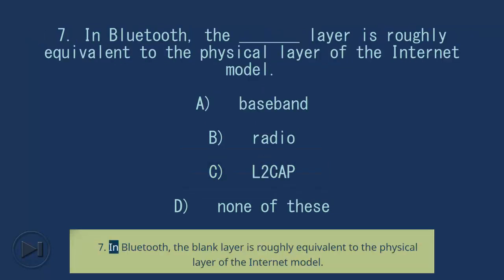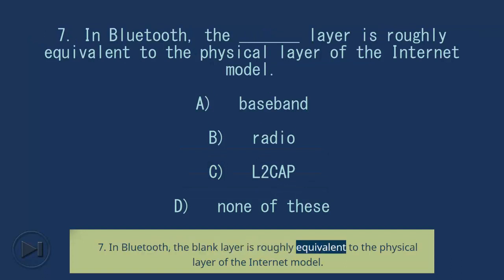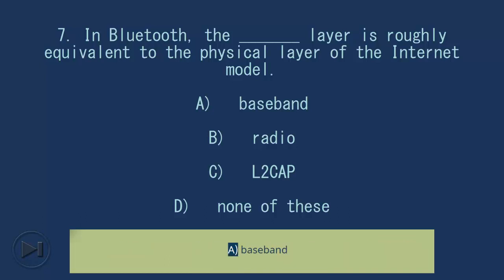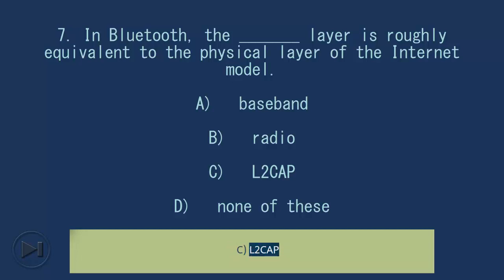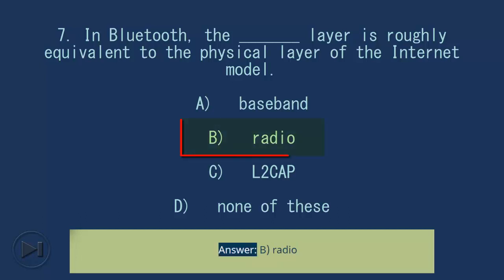Question 7: In Bluetooth, the blank layer is roughly equivalent to the physical layer of the internet model. A. Baseband, B. Radio, C. L2CAP, D. None of these. Answer: B. Radio.